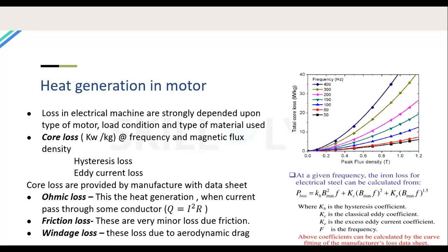Ohmic losses (I²R losses) are generated when current passes through conductors. These depend on conductor resistance — a thin wire has higher resistance, a thick wire has lower resistance, but wire thickness has implications for the electromagnetic design. Friction losses in bearings and minor windage losses due to aerodynamic drag are difficult to calculate and generally negligible, so they are usually neglected.